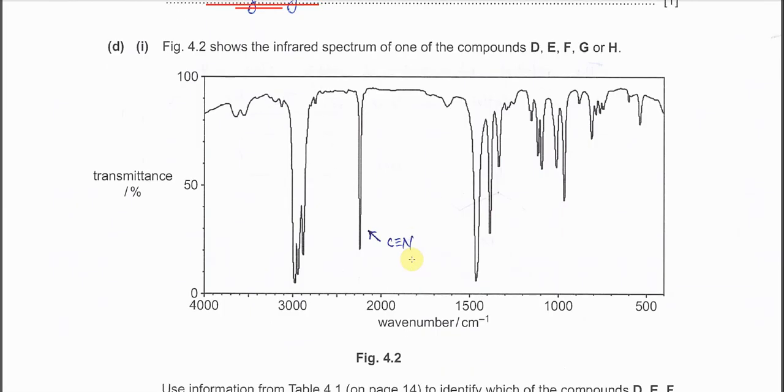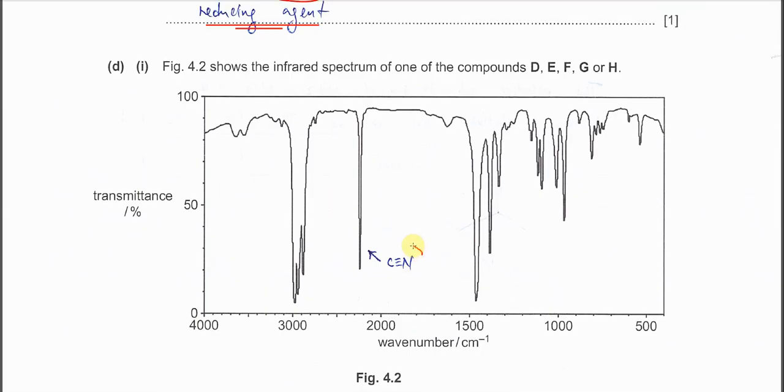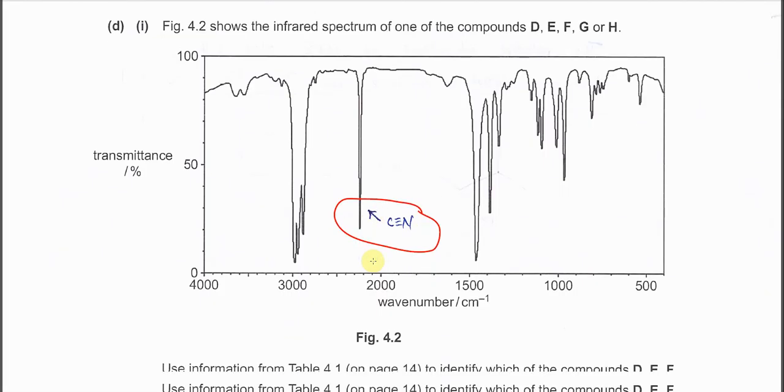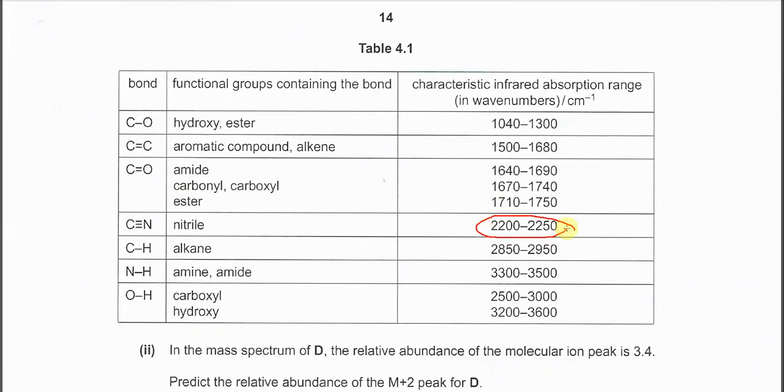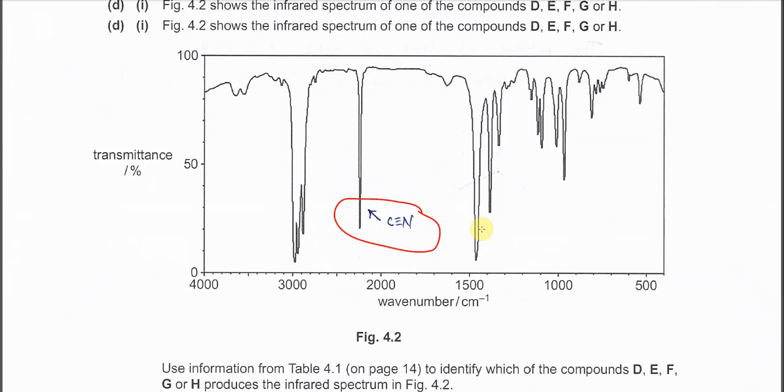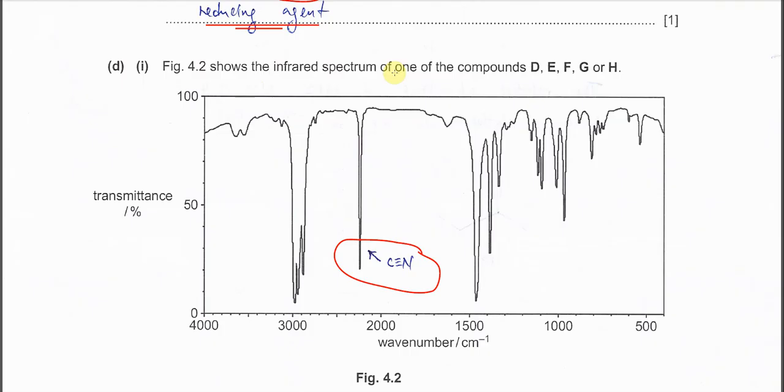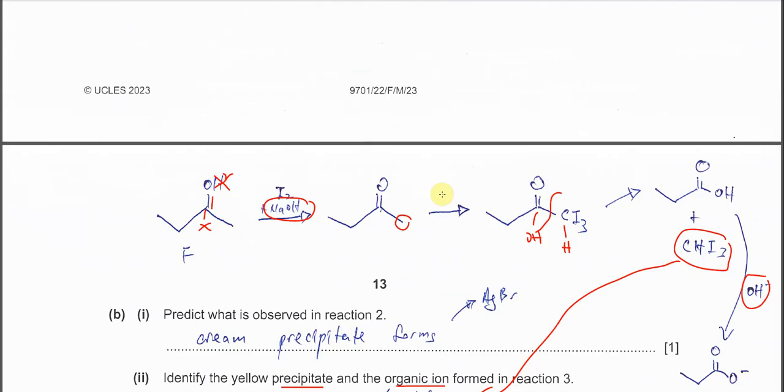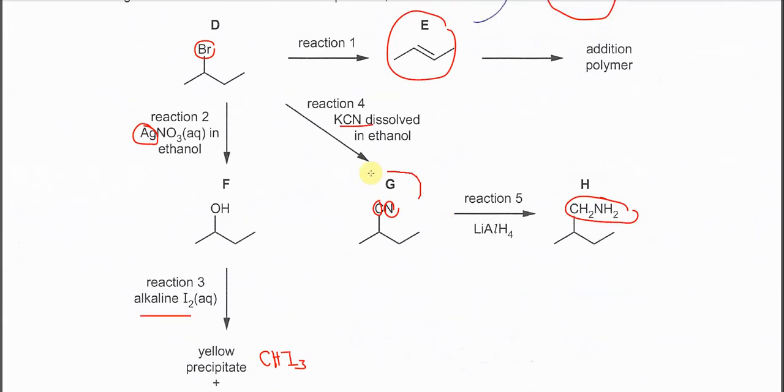From this IR spectrum, you should know that it has C≡N triple bond. Because it's around 2200 something. You can get it from the tables from here. Now this figure shows infrared spectrum of one of the compound either is D, E, F, G, or H. Then from this IR spectrum again, we know that it has nitrile group. So confirm it is G. It has the nitrile group here.